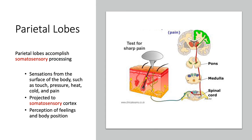The parietal lobes accomplish somatosensory processing — sensations from the surface of the body such as pain, touch, pressure, and temperature, detected by sensory receptors in the skin. These are relayed along afferent fibers to the CNS and projected to the somatosensory cortex within the parietal lobe. Importantly, pain entering on the right side of the body crosses over — or decussates — and is processed on the left side in the somatosensory cortex. The brain mostly receives sensory input from the opposite side of the body.